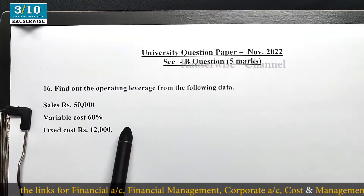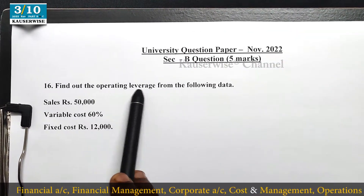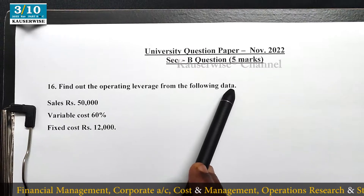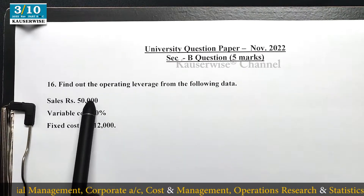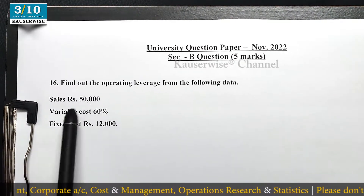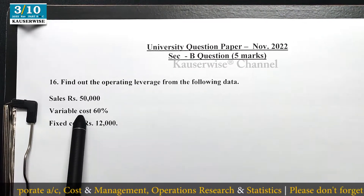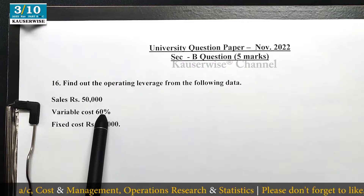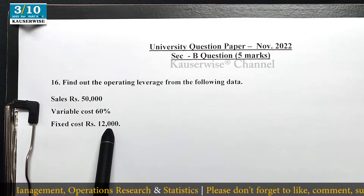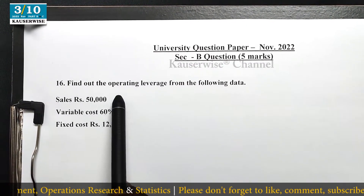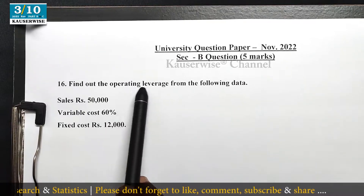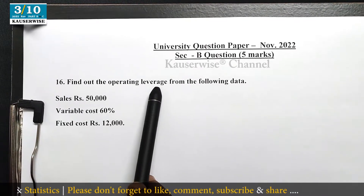See the problem. Find out the operating leverage from the following data. They have given: sales 50,000, variable cost 60%, fixed cost 12,000. With this information, they are asking us to calculate operating leverage.